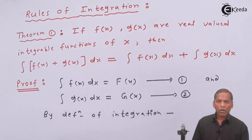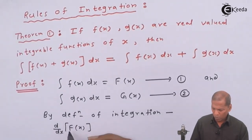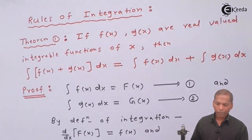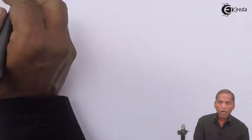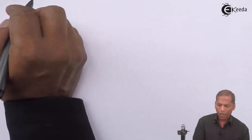We can write, d/dx of capital F(x) is equal to small f(x). And d/dx of capital G(x) is equal to small g(x).